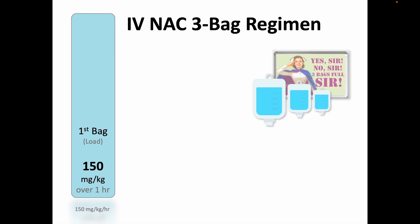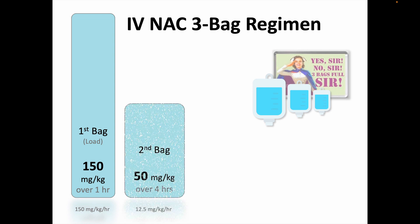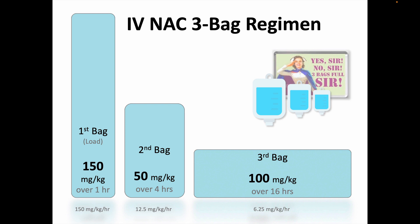Here is that three-bag regimen. Similar to the PO dosing, the IV regimen starts with a loading dose that is followed by ongoing lower doses. The IV loading dose is 150 milligrams per kilogram NAC given over one hour. Then the second IV bag is 50 milligrams per kilogram NAC total given over four hours. And then a third bag of 100 milligrams per kilogram is given over the next 16 hours.